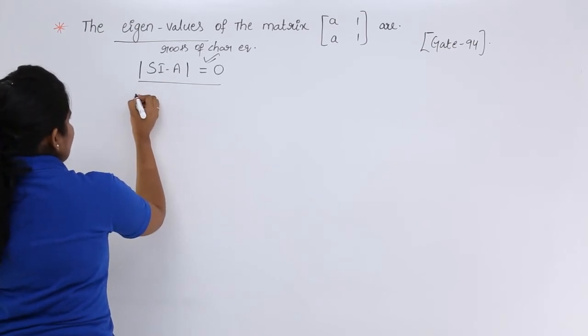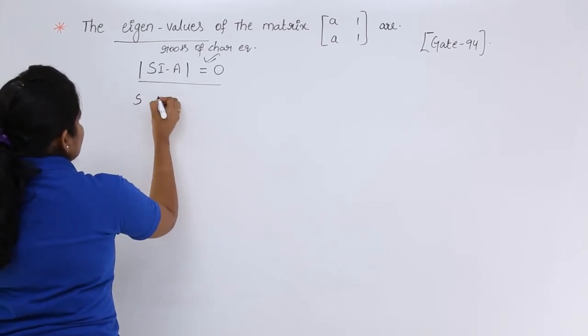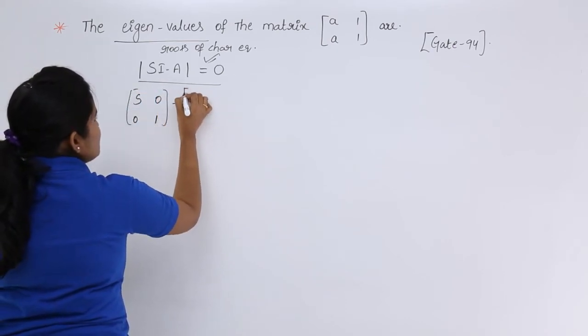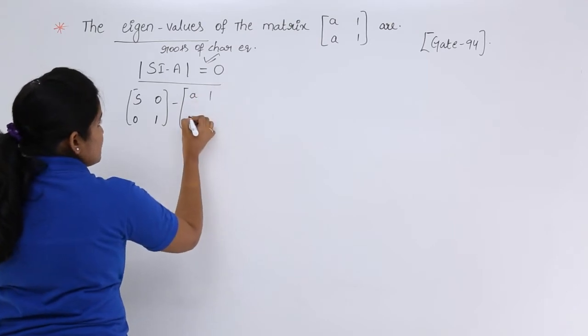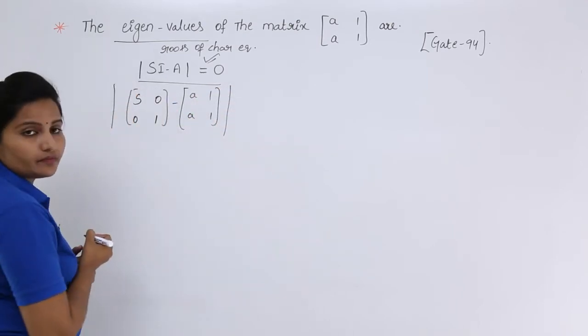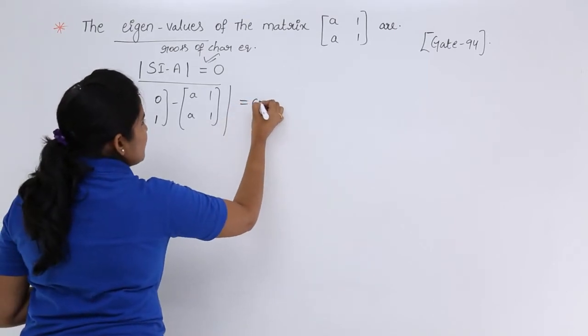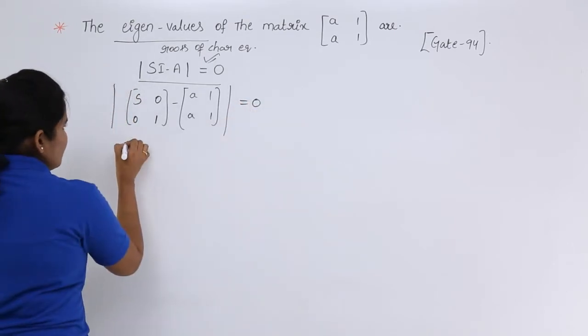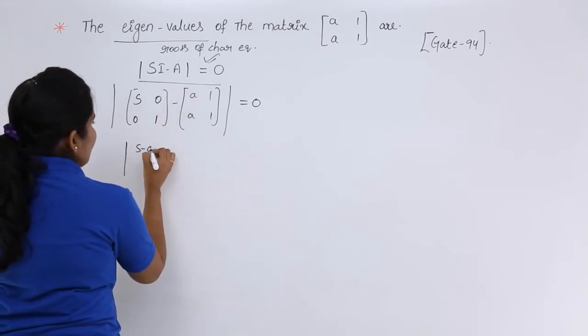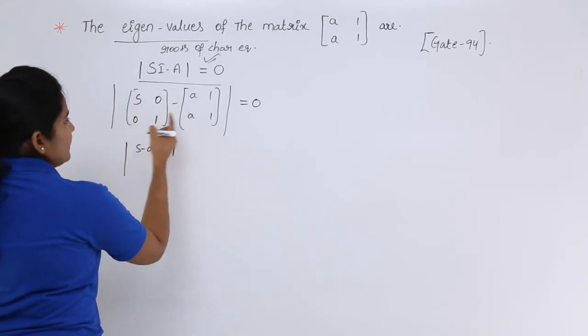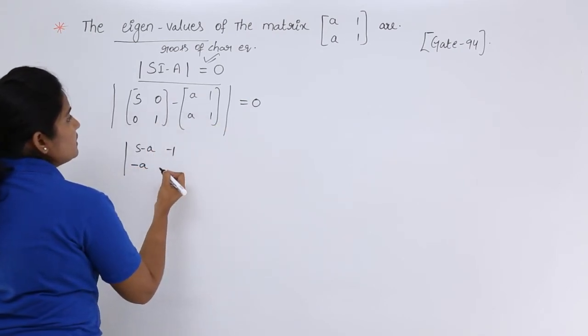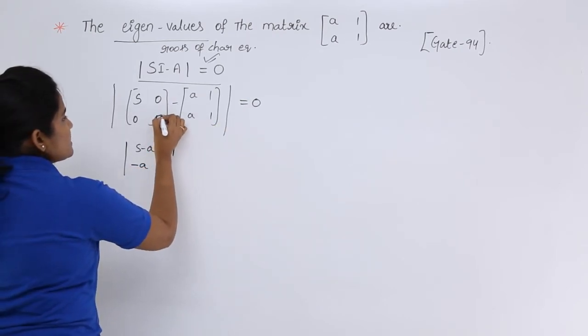So, Si means S 0, 0 S, and minus A means the given matrix. I am taking modulus for this and equating with 0. Now, this matrix will be S minus A and minus 1, and here minus A and here S minus 1.